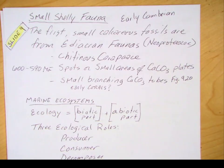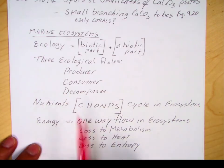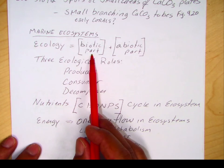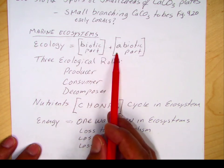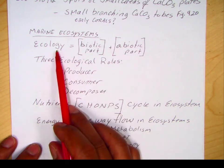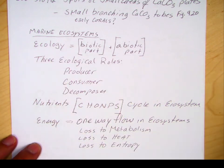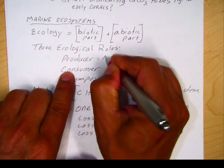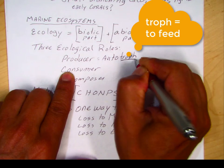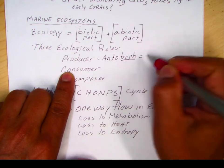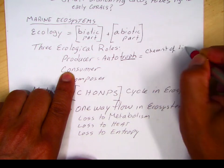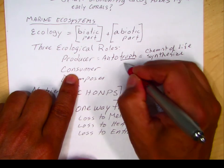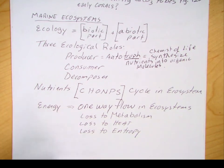Before looking more into the Cambrian system, let's look at marine ecosystems. Ecology involves two parts: the biotic part, which is the living part — animals and food webs — and the abiotic part, the non-living part, which is the chemistry, physics, and geology of the environment. Both together make up the ecosystem. In the marine environment, we look at three ecological roles. A producer is an autotroph — 'troph' means to feed — so they feed themselves. You can think of producers as the chemists of life: they synthesize nutrients into organic molecules, taking raw chemical elements like carbon, hydrogen, and nitrogen and making them into carbohydrates. Producers are the algae, plants, or archaea doing chemosynthesis.